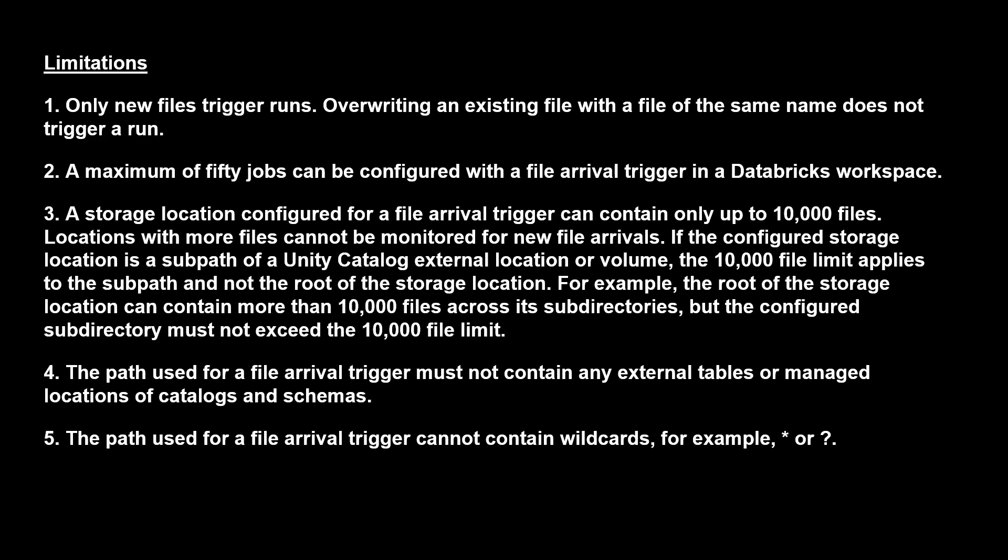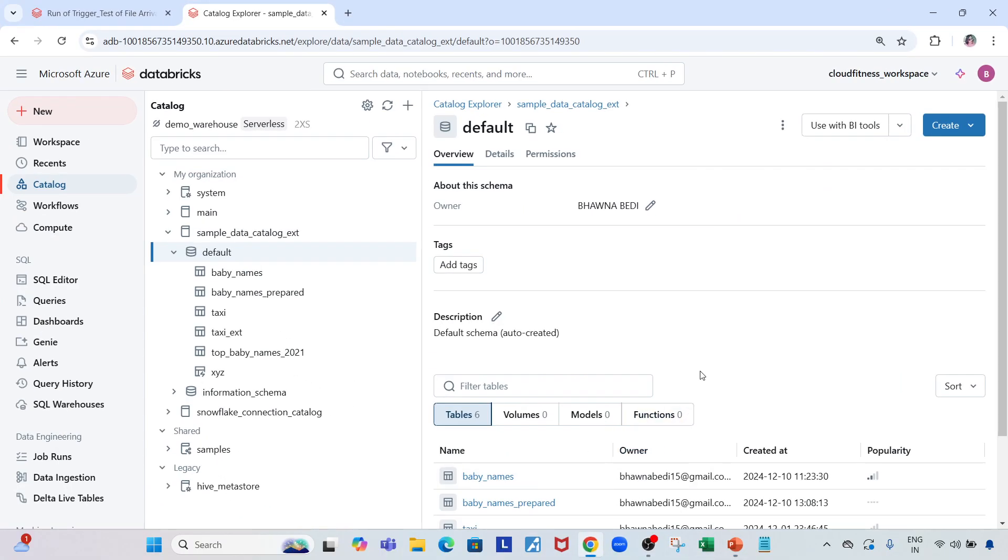It checks everything recursively. There are also a few limitations: if you overwrite a file with the same name it doesn't work — the file has to be a new file with a different name for it to be detected. A maximum of 50 jobs can be configured with a file arrival trigger in a Databricks workspace. The path used for the file arrival trigger must not contain any external table or managed location, and the path cannot have any kind of wildcards.